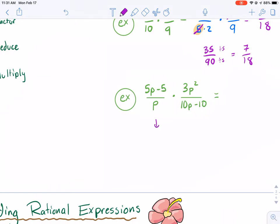So we're going to start by factoring these and seeing what we get. So we can factor out a 5 because they both have a common coefficient of 5. And we get p minus 1 in the top. p, we already said we can't factor,